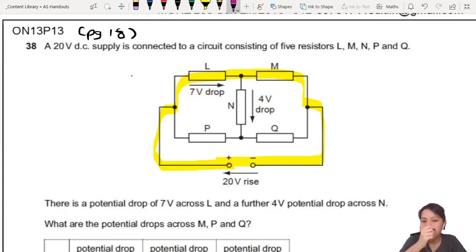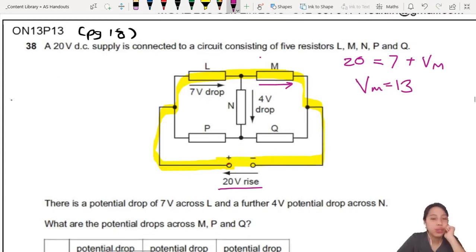Let's go with the outside loop first. Loop, go back to the battery. Let's call it one loop. So in that loop, you go up by 20. That means you drop by seven, and then another drop here. I don't know, let's call it VM. Then, done already. So, 20 equals seven plus what? 13. So your VM has to be 13. That's how you can solve the first one.